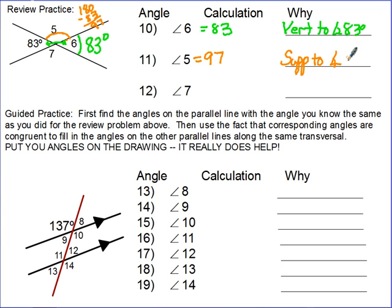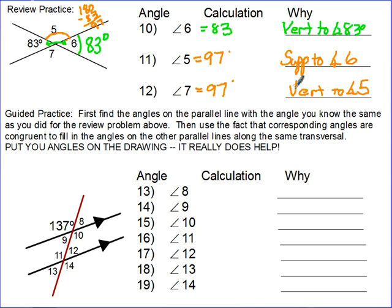Angle 5 is 97 degrees because it's supplementary, and angle 7 is vertical to angle 6. Almost any angle here can be either vertical to some angle or supplementary to some angle. I want you to notice that I like to write my angles on the diagram — you should do that too. Everyone whose quiz I looked at who did that had a much better chance of getting the questions right.